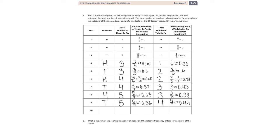Last toss — and we did get tails. So our total number of heads so far is five, and we have five divided by ten, which gives us one-half, written as 0.5. Our number of tails is also five, so we have five out of ten, which is one-half, written as 0.5.